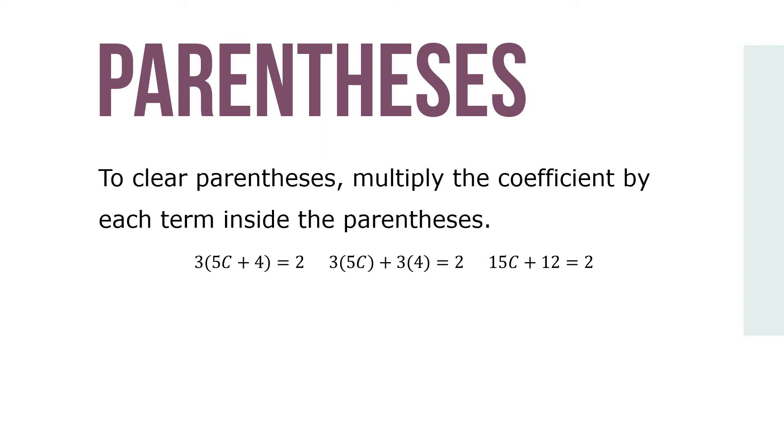To clear parentheses, multiply the coefficient by each term inside the parentheses. So if our equation is 3(5c + 4) = 2, then we convert it to 15c + 12 = 2.